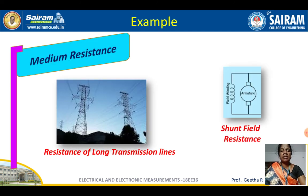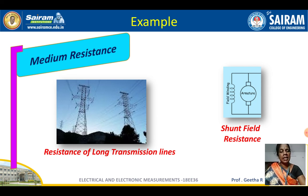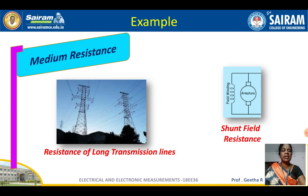Medium resistance has a range between 1 ohm and 0.1 megaohm. Examples include the resistance of long transmission lines, which falls in this range between 1 ohm and 100 kilohms, as well as shunt field resistance. Note that series field resistance is low resistance, while shunt field resistance is medium resistance.